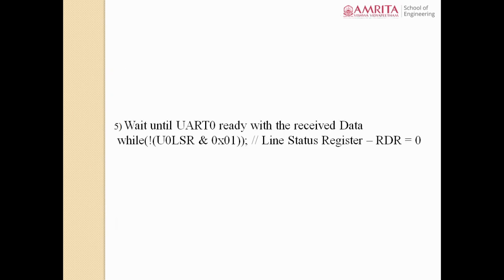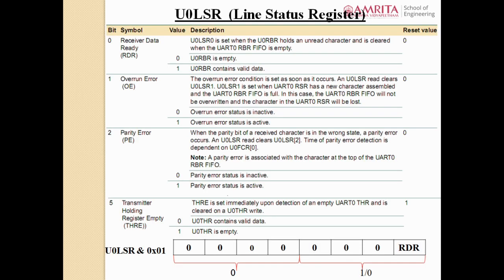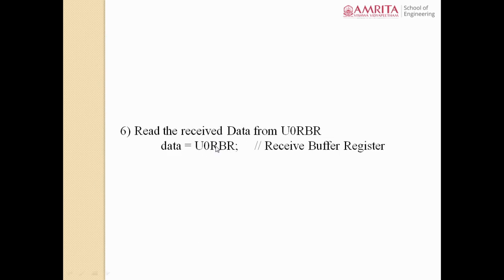In step five, you need to wait until UART is ready with the received data. In the previous program, before transmission of a character, you checked whether UART was ready to receive the new character to be transmitted. Similarly here, you are checking whether UART is ready with the received character. The received character will be available in a register known as U0RBR. Once reception is over, the received data will be present in U0RBR and then moved into a variable called 'data'. You need to check whether reception of the character is complete in RBR.